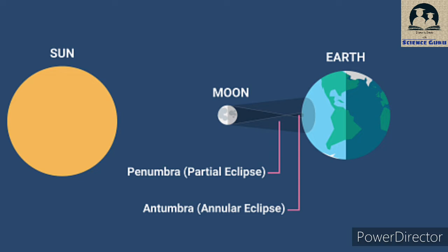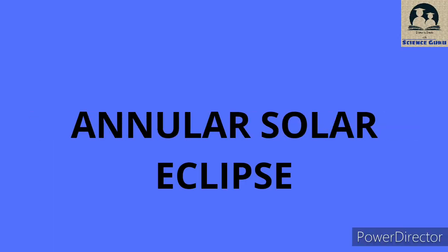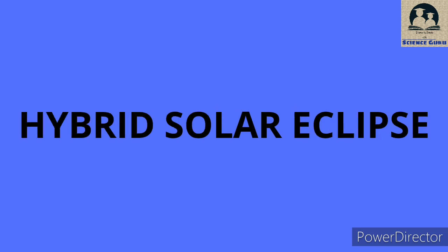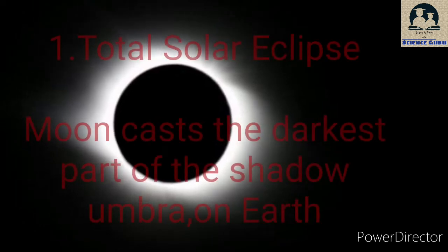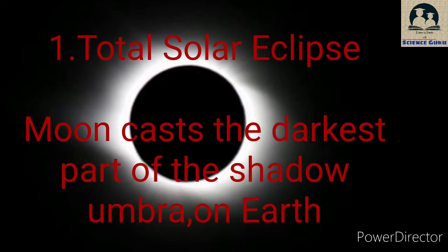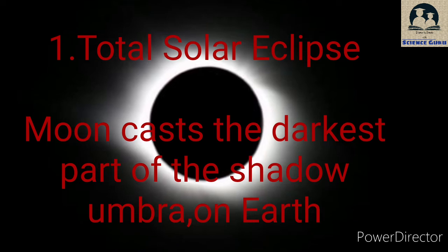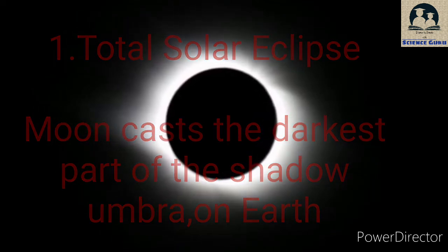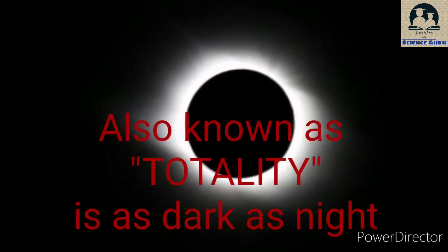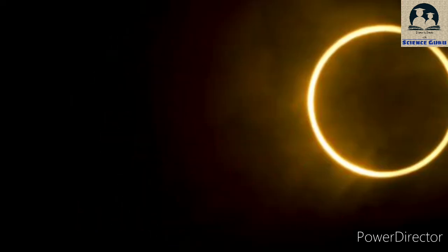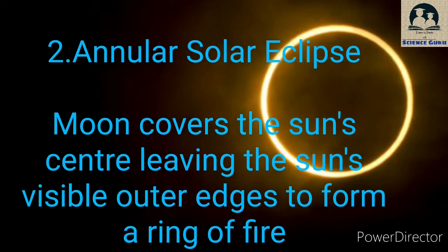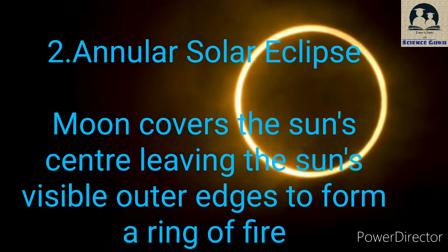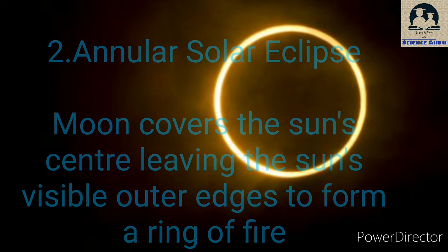Next we are going to discuss the different types of solar eclipses. There are four types of solar eclipses. First one is total solar eclipse. Second one is annular solar eclipse. Third one is hybrid solar eclipse. And fourth one is partial solar eclipse. Total solar eclipses occur when the new moon comes between the sun and the earth and casts the darkest part of its shadow, the Umbra, on earth. A full solar eclipse known as totality is almost as dark as night. An annular solar eclipse happens when the moon covers the sun's center, leaving the sun's visible outer edges to form a ring of fire or annulus around the moon.